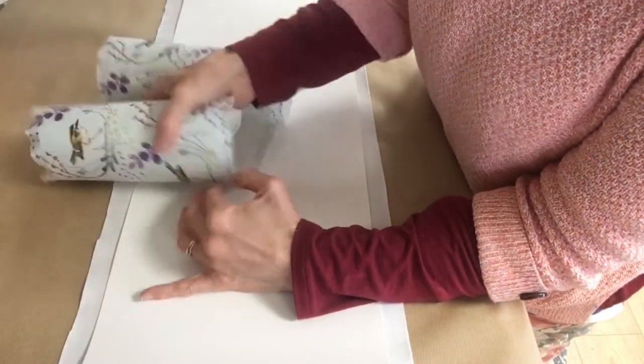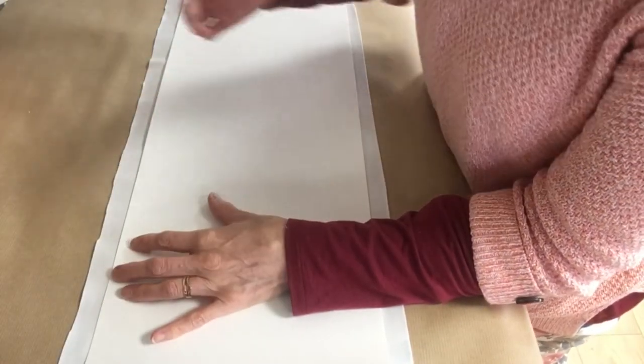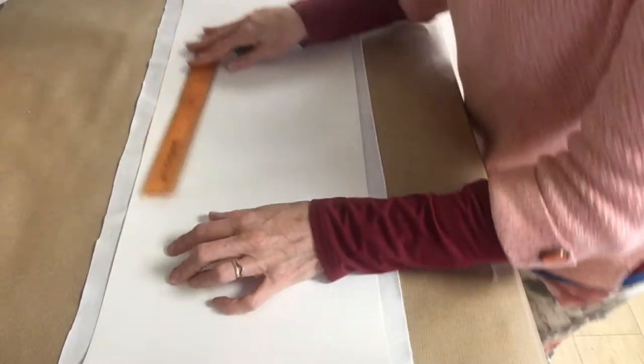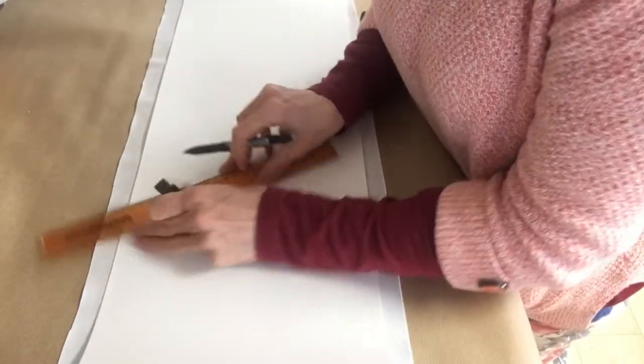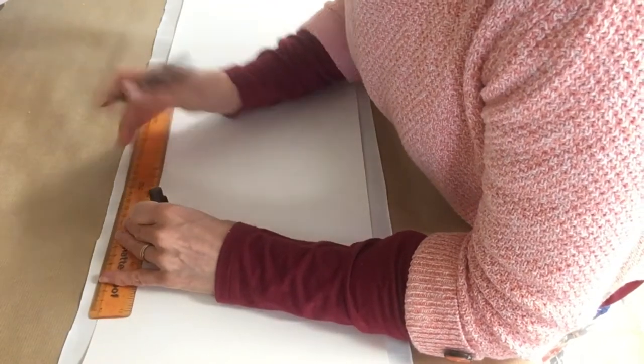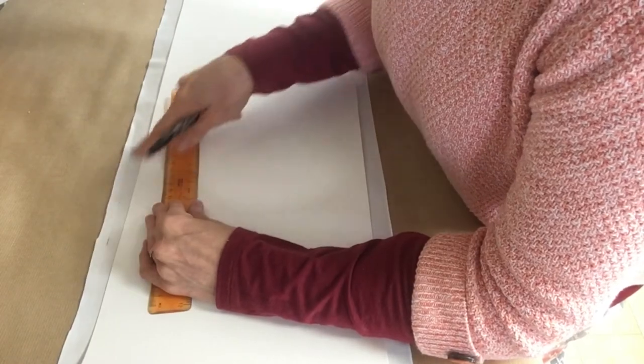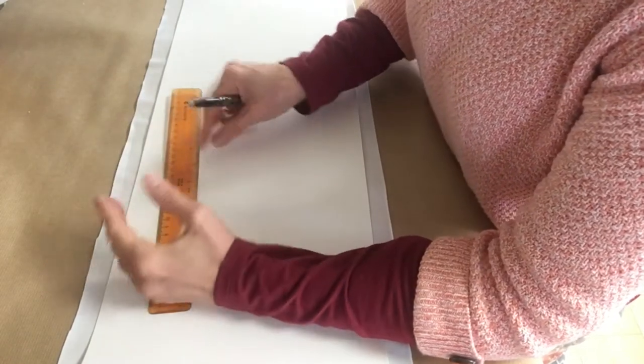When you've peeled this back and stuck it down, you then need to trim this back to the same size as this one is - that's 12 millimeters. If you're happy to just cut, you can. If you're not happy to cut it, then you can mark out your 12 mil lines, draw a line - I'm using a vanishing pen here - and then you've got a guide to cut along if you feel more comfortable doing it that way.